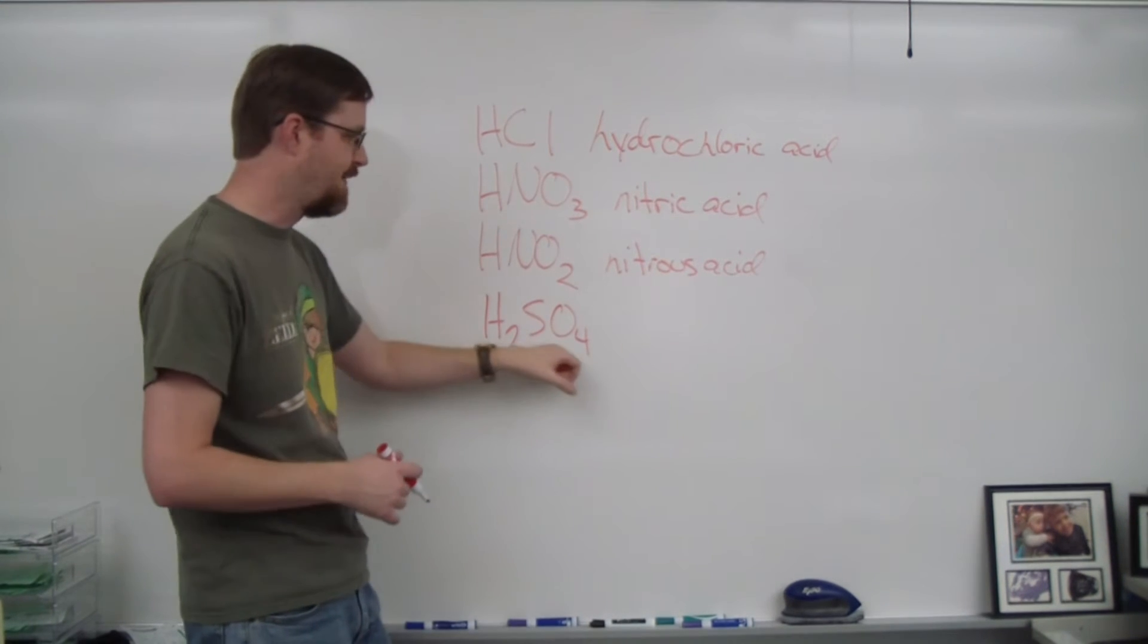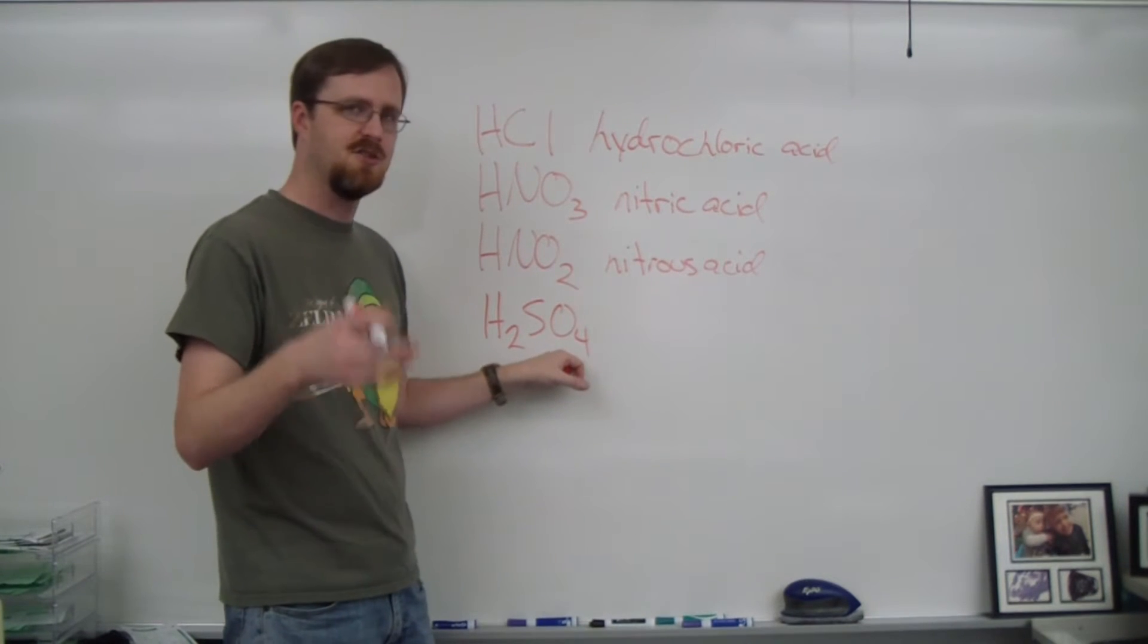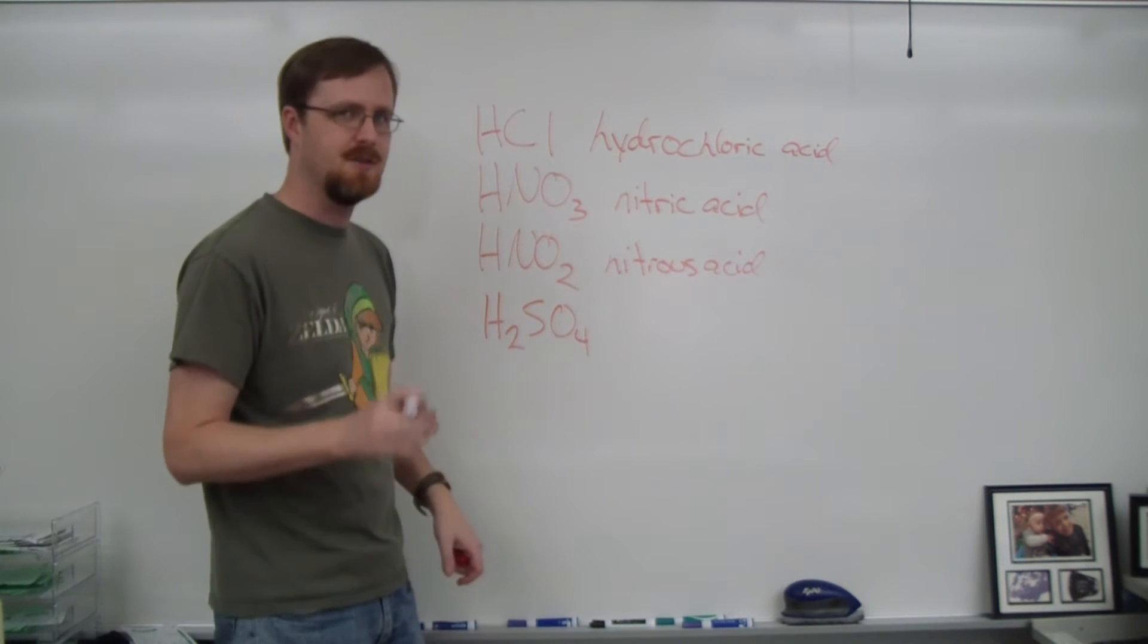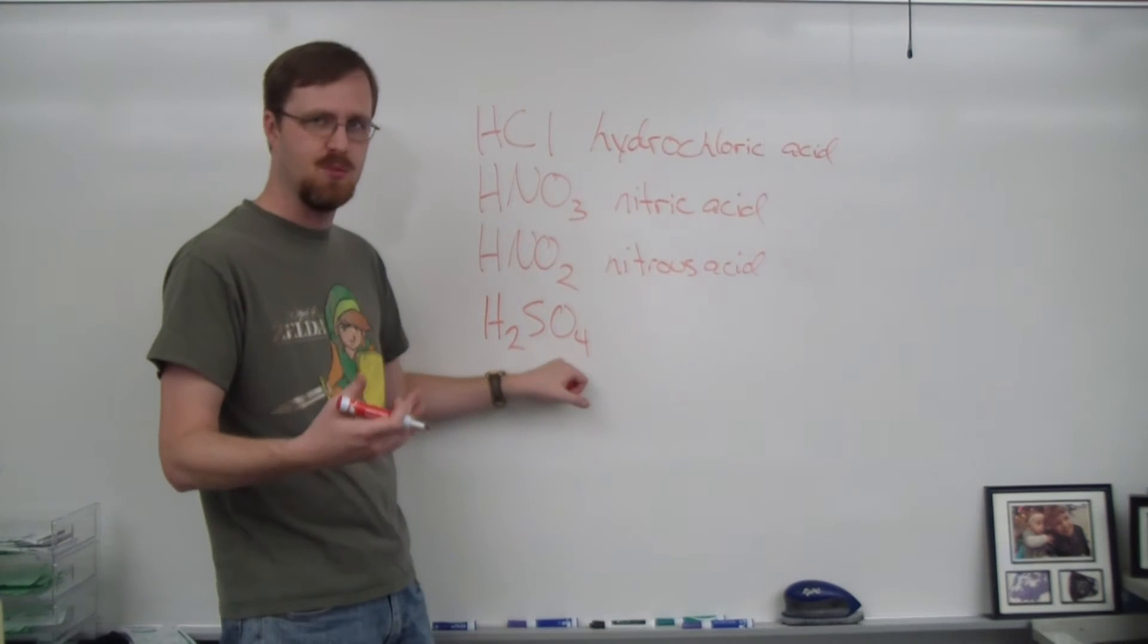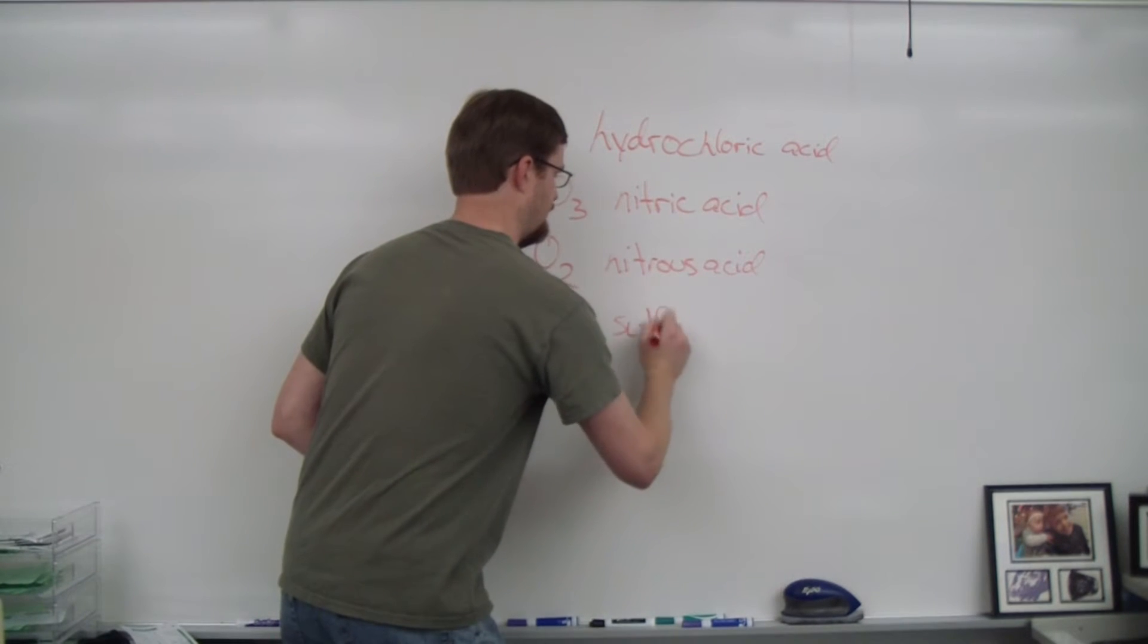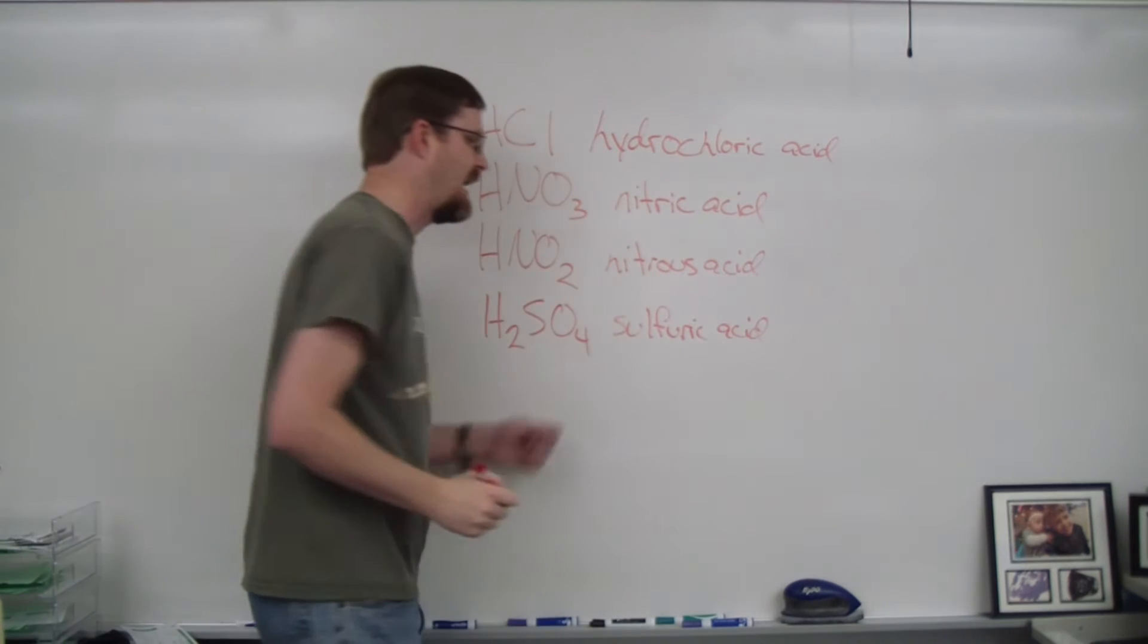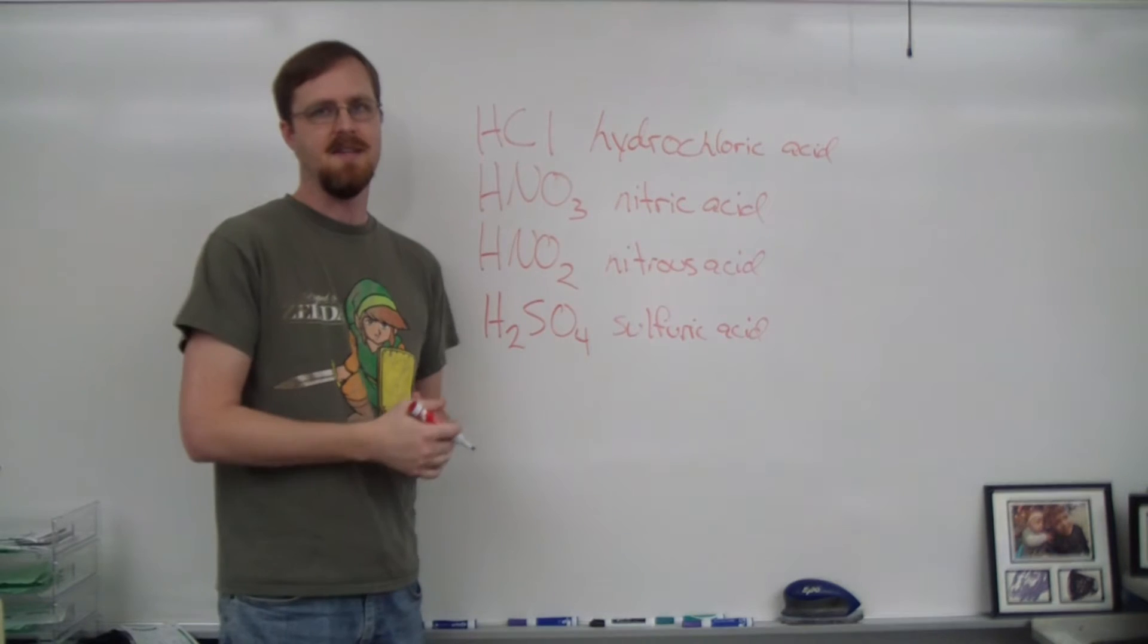Now I have one final example down here, which I have very specifically because anything that's got sulfur or phosphorous in it has a slightly different rule to it. Because if we follow the same rules, well, this is sulfate, which would become sulfic, and we would call this sulfic acid, which we don't. We call this sulfuric acid. And the same thing happens for phosphate. It's not phosphic acid. It's phosphoric acid.